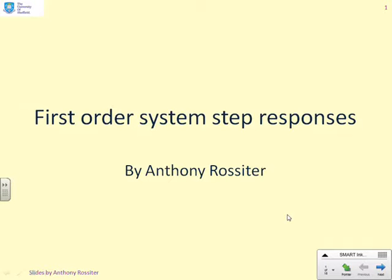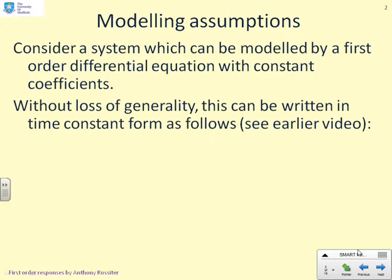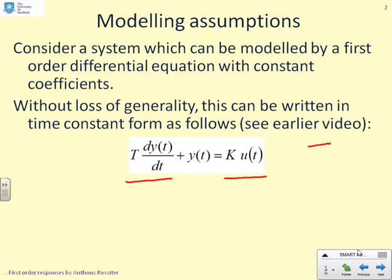This lecture is the second lecture on first-order responses, focusing on what is called a step response. We'll revisit modelling assumptions from the first video. A first-order system with constant coefficients takes a standard form — written in time-constant form as τ dy/dt plus y(t) equals k·u(t). The key coefficients of interest are the time constant τ and the gain k.